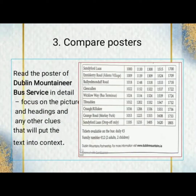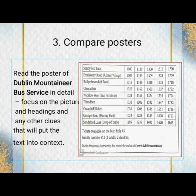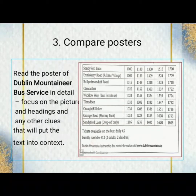The third topic: Compare Posters. When you look at the poster 'Doubling Mountaineer Bus Service' on page 120, you should focus on the pictures and headings, and any other clues that will put the text into context. The Doubling Mountaineer is the name of the bus. This poster is advertising a bus service — it gives details of the name, time, and route of the bus service.